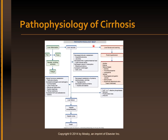Liver fibrosis and scarring can result in portal hypertension, resulting in ascites, edema, splenomegaly, varices, hemorrhoids, and superficial abdominal veins, which is caput medusae.